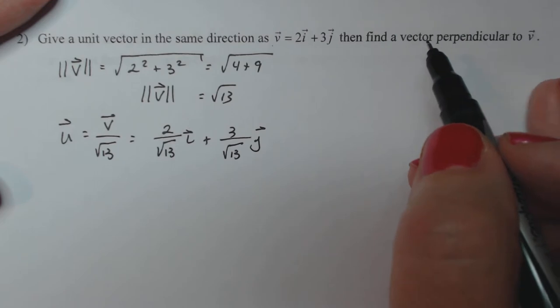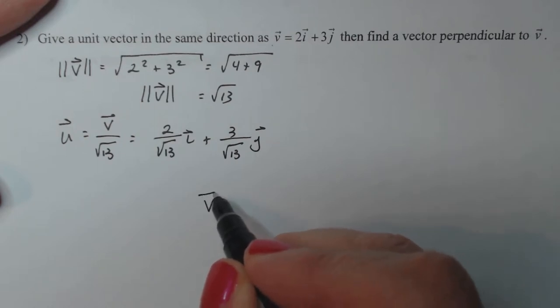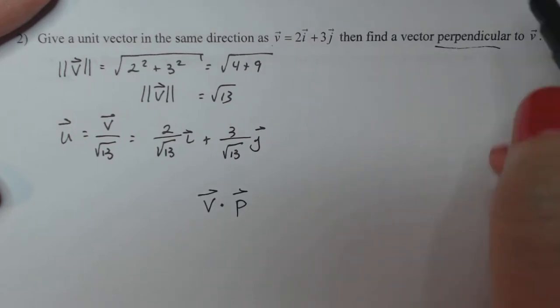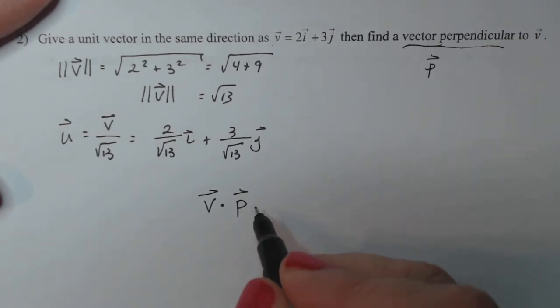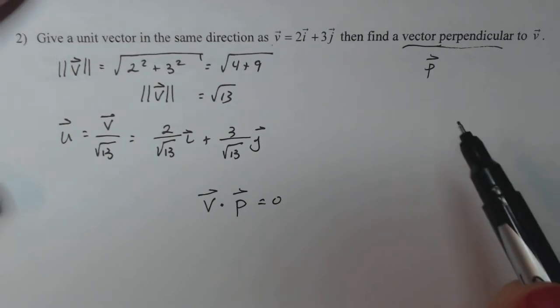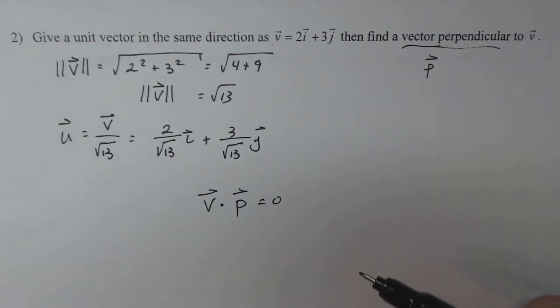So there's my vector of length one. Then I want to find a vector perpendicular to V. Well, the only thing we really know about perpendicular vectors is that their dot product, I'm using P for perpendicular, that their dot product has to be zero. Now know what the question says: then find a vector perpendicular to V. There's lots of vectors that are going to be perpendicular to V. In fact, there's an infinite number of them. I just need to find one.